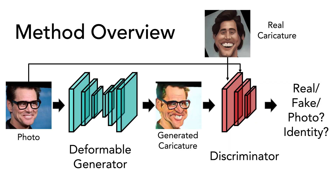So how does WarpGAN work? The framework is simply composed of two modules: a deformable generator, which can both change the texture of the input image and deform the image to change the shape of the face, and a discriminator that distinguishes between the texture of real caricatures and generated caricatures and photos, while preserving the identity.